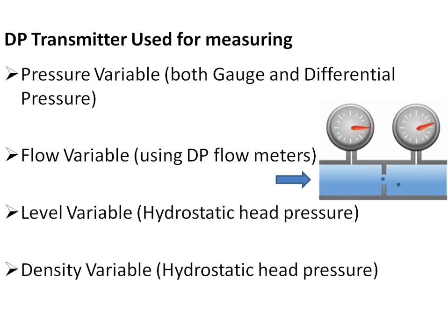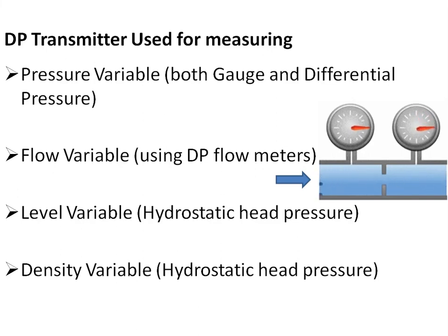In this animation, we can see the fluid flow causing a pressure drop in the downstream volume of the restriction, which is the primary sensing element.